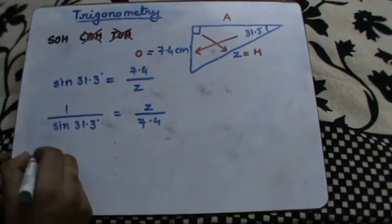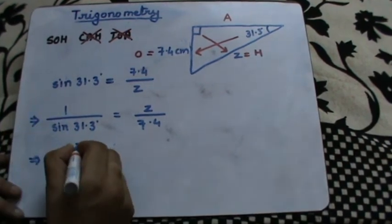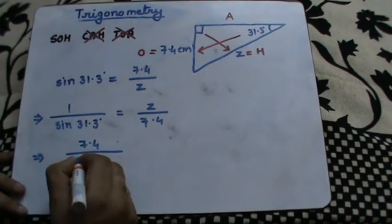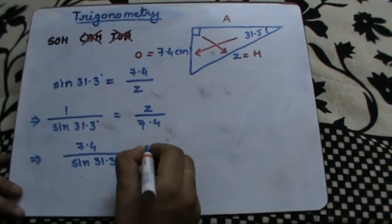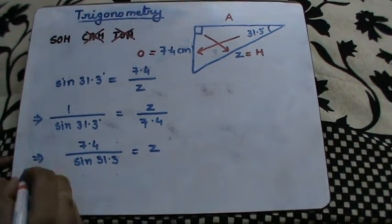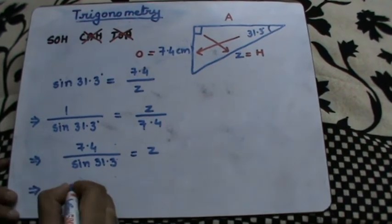Now I'm going to use a calculator and get the value of Z correct to three significant figures. So I have 7.4 divided by sin 31.3°.